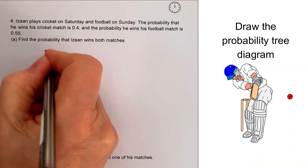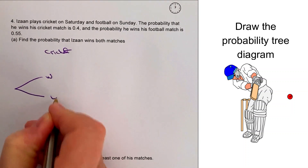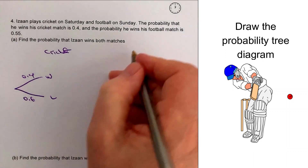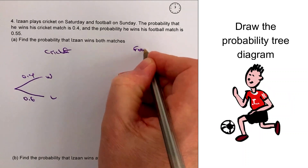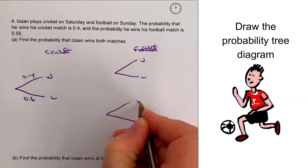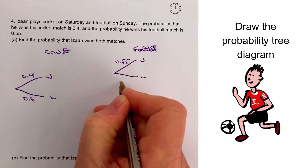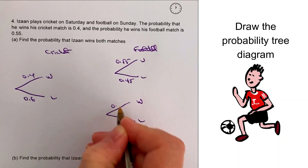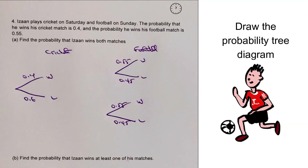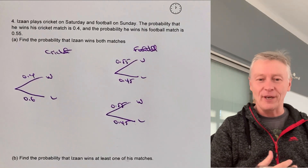For cricket, he can either win or lose — that's 0.4 to win and 0.6 to lose. On Sunday he plays football and can also win or lose. The probability of winning at football is 0.55, which means losing at football would be 0.45. We've now drawn our diagram and can use it to answer the questions.